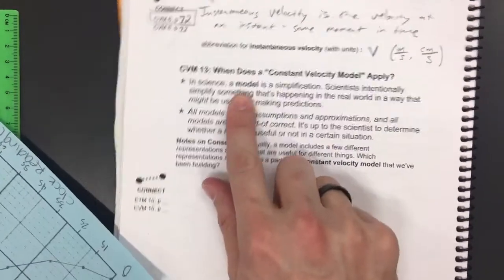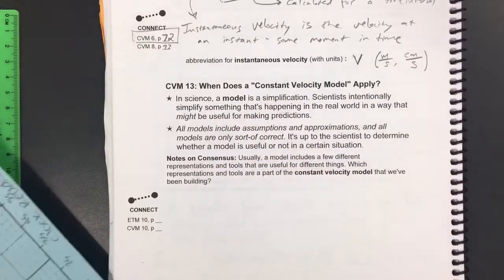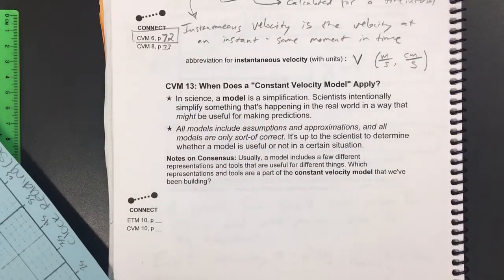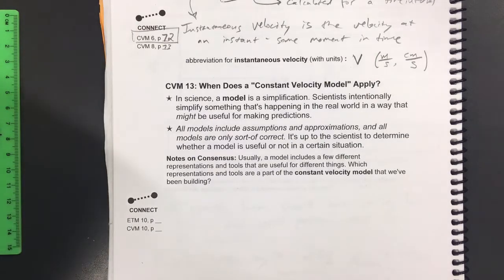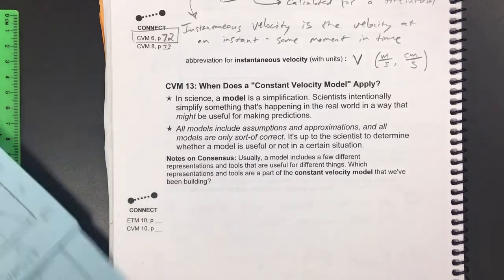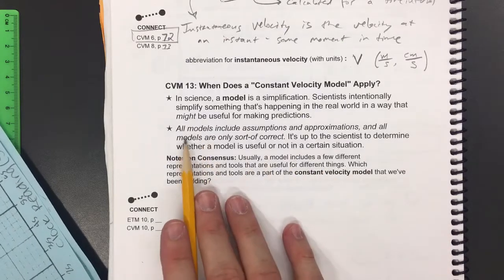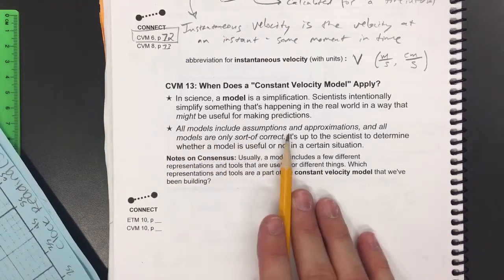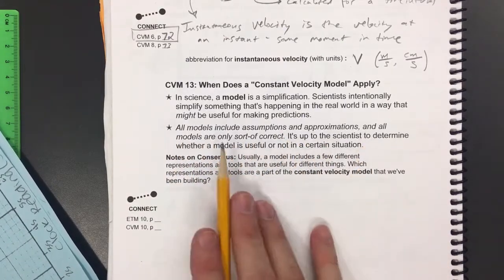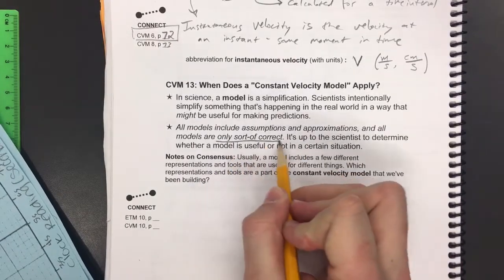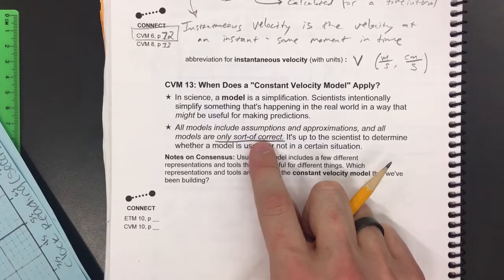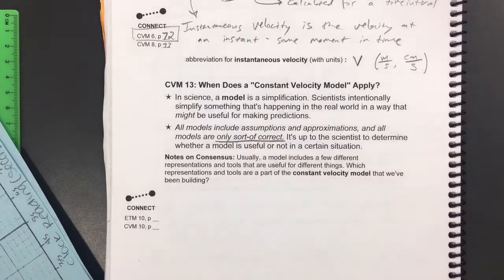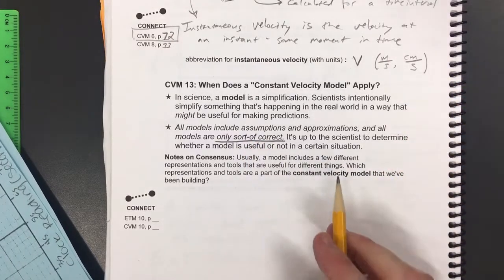In science, a model is a simplification. Scientists intentionally simplify something happening in the real world in a way that's useful for making predictions. And this is the key: all models include assumptions and approximations, and all models are only sort of correct. The fact that something's not exactly constant velocity doesn't mean that constant velocity isn't a useful approximation or simplification.